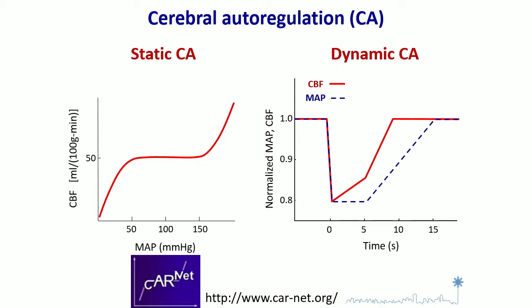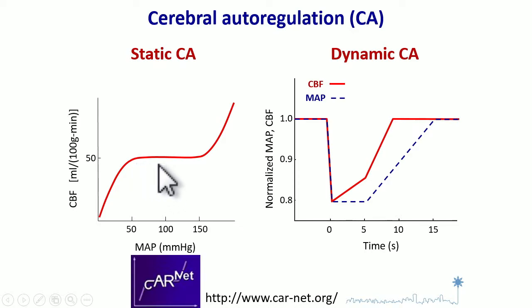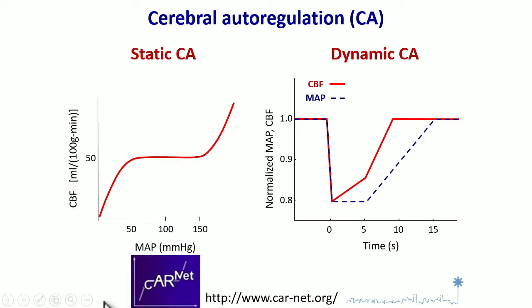This is represented by these curves. This is a standard autoregulation curve, which shows that there is approximately constant blood flow over the range of mean arterial pressure. This curve has been used by the cerebral autoregulation research network, which is an online resource for anyone interested in this field.